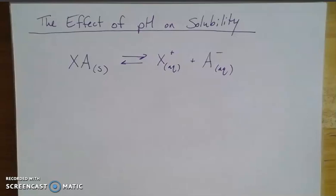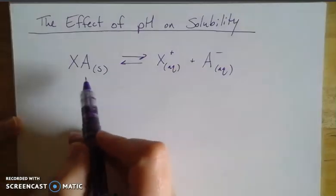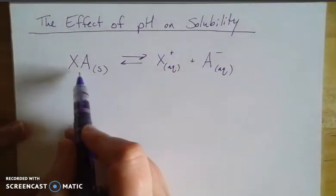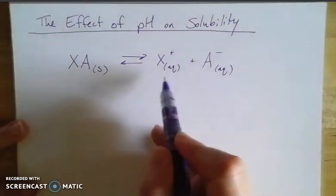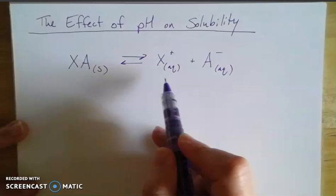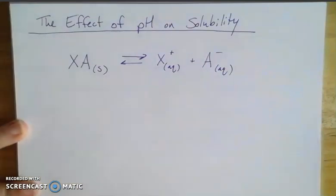Alrighty, let's talk a little bit about the effect of pH on the solubility of solid compounds. If we have a generalized solid here, XA, it's going to dissolve and dissociate into its component pieces where X is my cation, some sort of metal ion, and A is my anion.